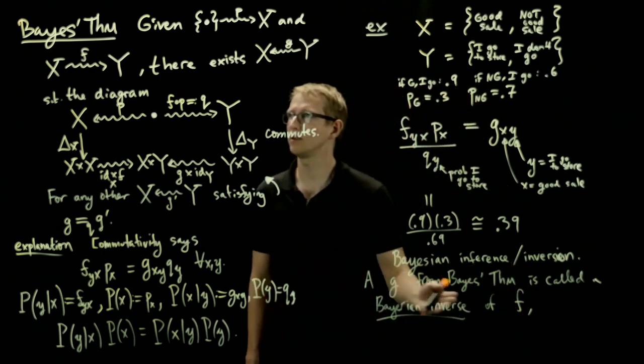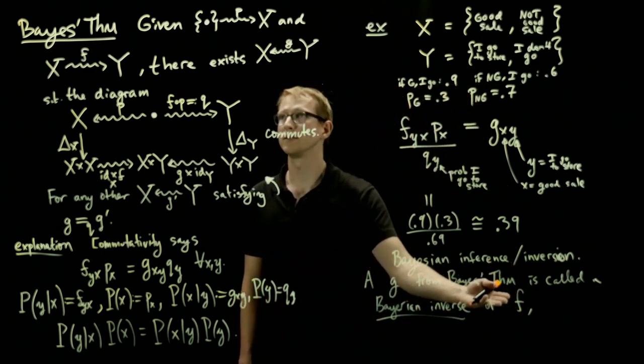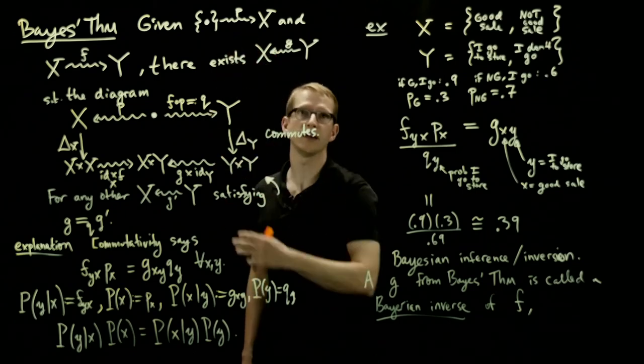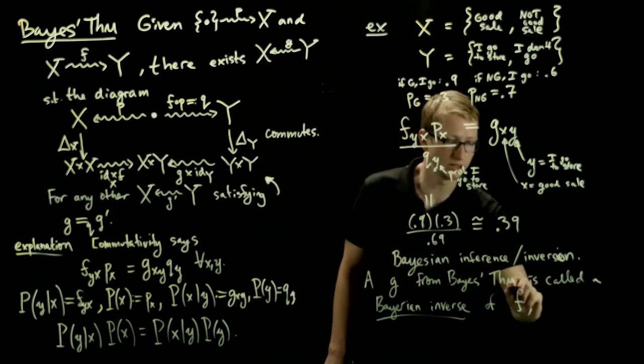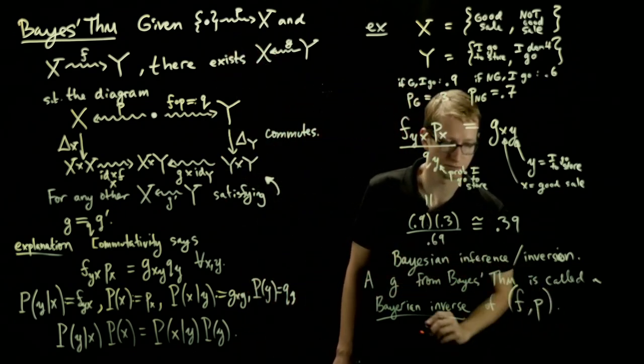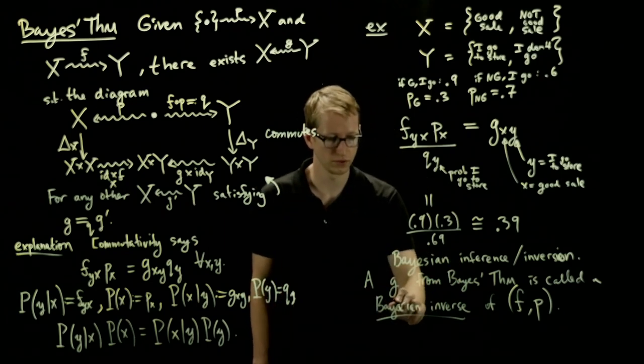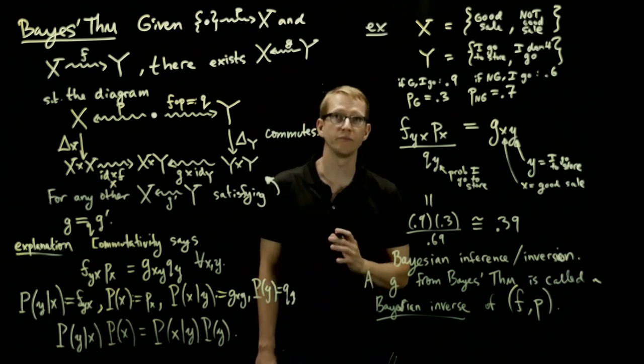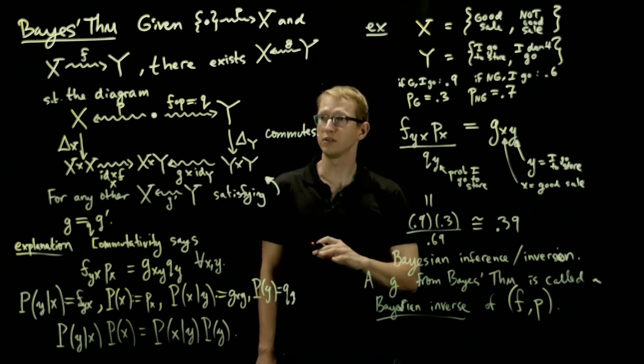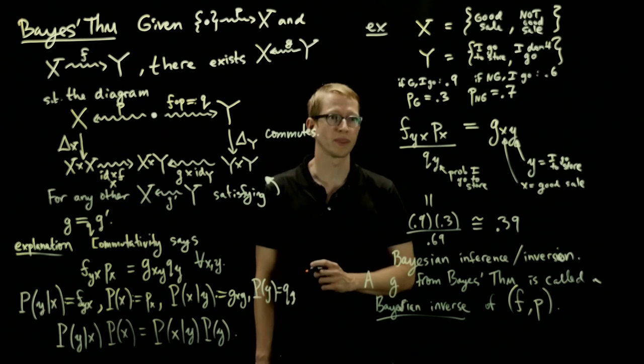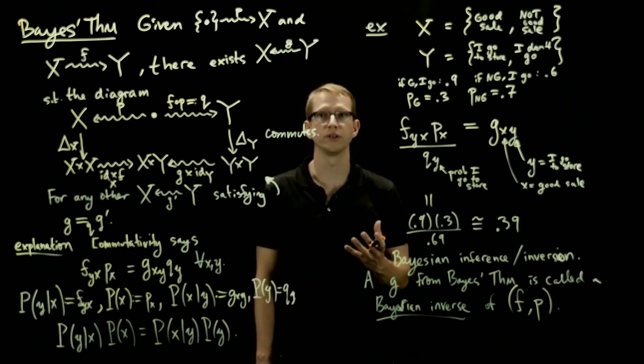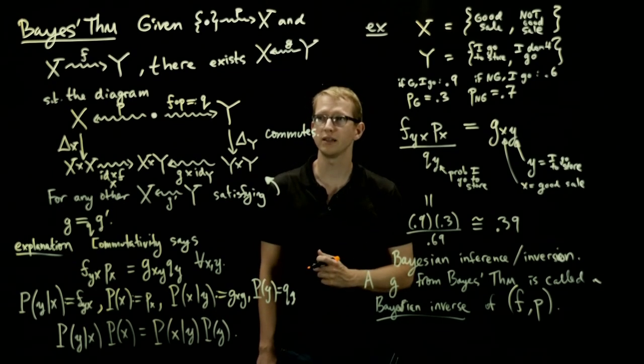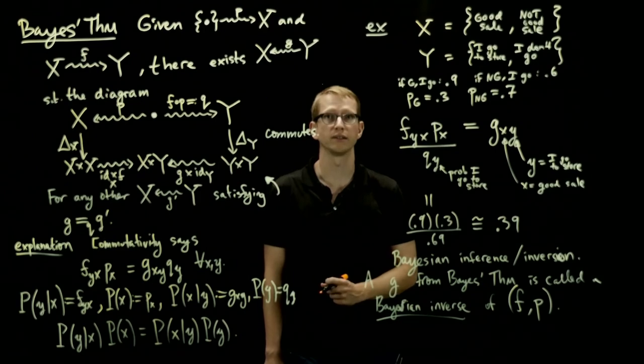And it would be a little bit inappropriate to say that it only depends on f because it also depends on your prior probability distribution p. So this is an interesting reformulation of Bayes' theorem that seems to be totally in the language of category theory. And it therefore makes it amenable to a wide range of techniques that could be used to analyze and understand it, and perhaps even generalize this idea to other contexts.